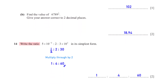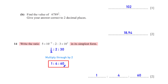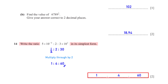Write the ratio 5 × 10⁻¹ : 2 : 3 × 10¹ in its simplest form. 5 × 10⁻¹ is 0.5, and 3 × 10¹ is 30. When we multiply through the ratio by 2 we have 1 : 4 : 60, which is in its simplest form.